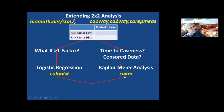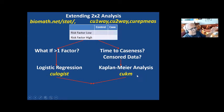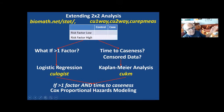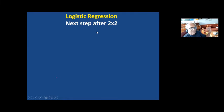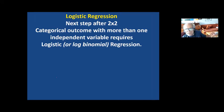A lot of our pediatric residents do projects involving looking back at the past. If they look at transplanted children, some kids were transplanted 10 years ago — so you have 10-year follow-up — but some kids were transplanted six months ago, so you only have six months of follow-up. You have complete data but not the same follow-up in every person — that is called censoring. When that happens, we do Kaplan-Meier analysis using CuKM. Finally, if you have both more than one factor and time to caseness, you need Cox proportional hazards modeling.